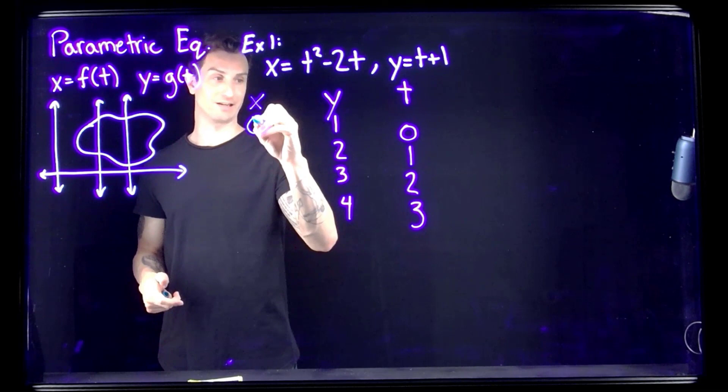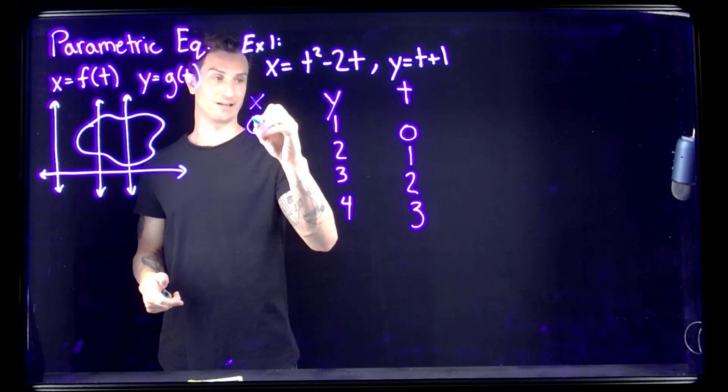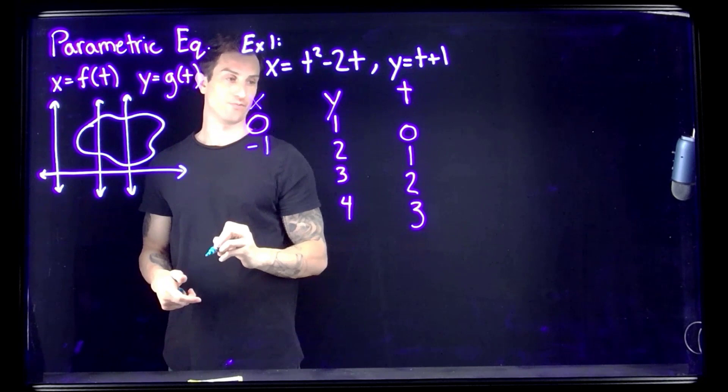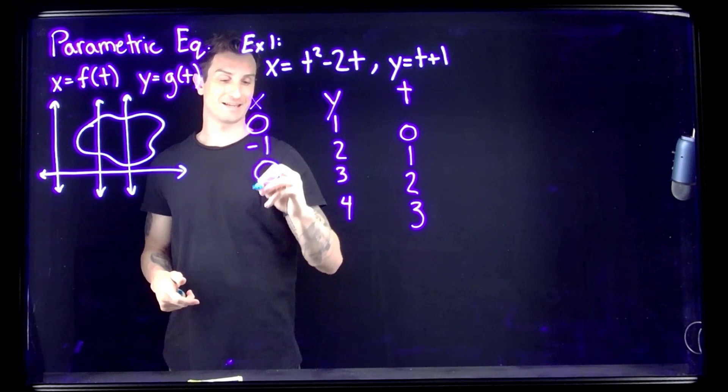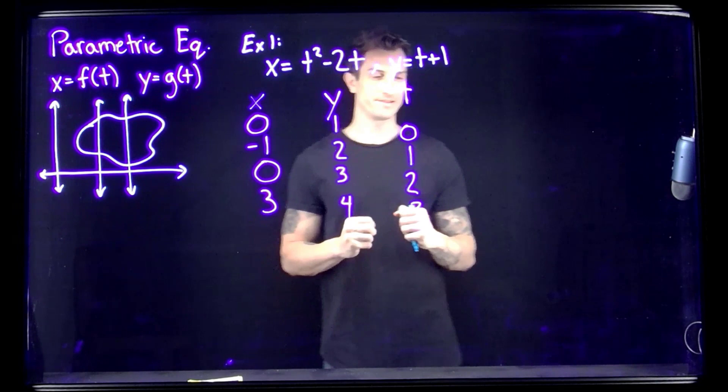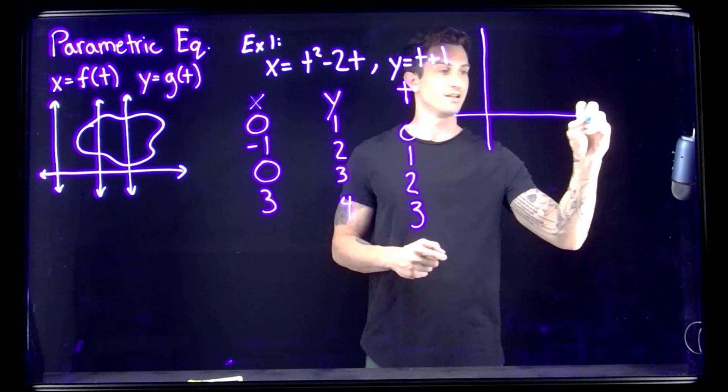For x, we have a little more work. We're plugging in the t values, not the y values. Plugging in 0 gives 0; plugging in 1 gives negative 1; plugging in 2 gives 0; and plugging in 3 gives 3 squared minus 6, which is 3. So we have our four points.